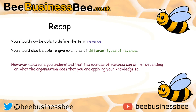A quick recap: you should now be able to define the term revenue and give some examples of the different types or sources of revenue that exist in a business. If you can't, pause the video, go back, think about it, and maybe jot some answers down to share with your teacher. It's really important to understand that sources of revenue can differ depending on which organisation you look at — a leisure centre is different from a cake shop or a florist. Remember to apply your answer to show more than just knowledge as one of those skills.